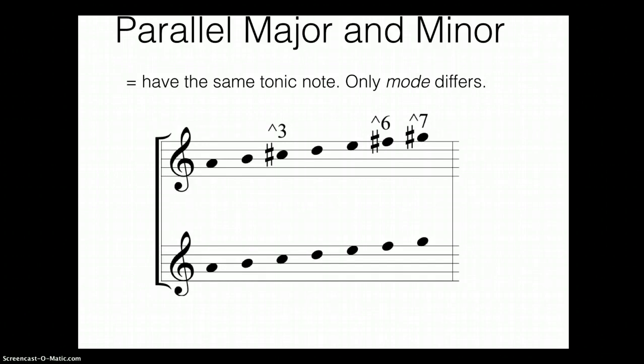On top you have an A major scale with C sharp, F sharp, and G sharp. On the bottom staff you have the A minor scale with naturals on all of those scale degrees. So those are the scale degrees we're talking about this whole video.